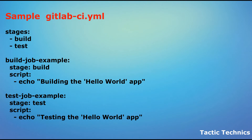Sample GitLab CI YML. Stages: Build, Test. Build job example — stage: build, script: echo building the Hello World app. Test job example — stage: test, script: echo testing the Hello World app.